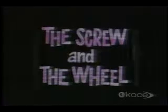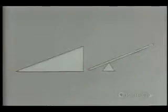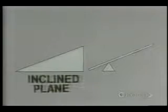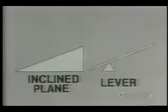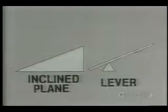And now, the screw and the wheel. How many different types of simple machine do you think there are? Two. There are only two basic machines: the inclined plane and the lever. These are the mother and father of every machine in the world. All the others are merely variations on the same theme.